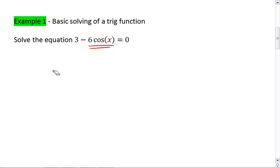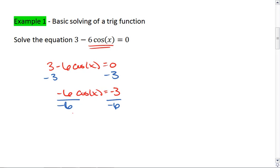Let's start at the very beginning. We start with 3 minus 6 cosine x equals 0. To solve for x, we're first going to subtract 3 from both sides. We get negative 6 cosine x equals negative 3. Now divide by negative 6 on both sides. We get cosine x equals 1 half.